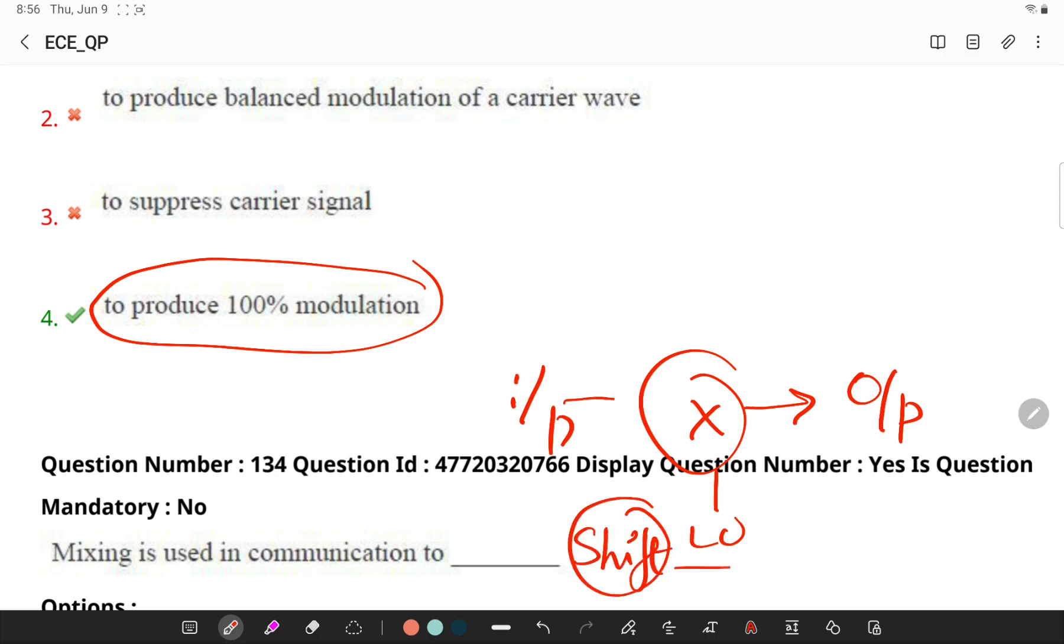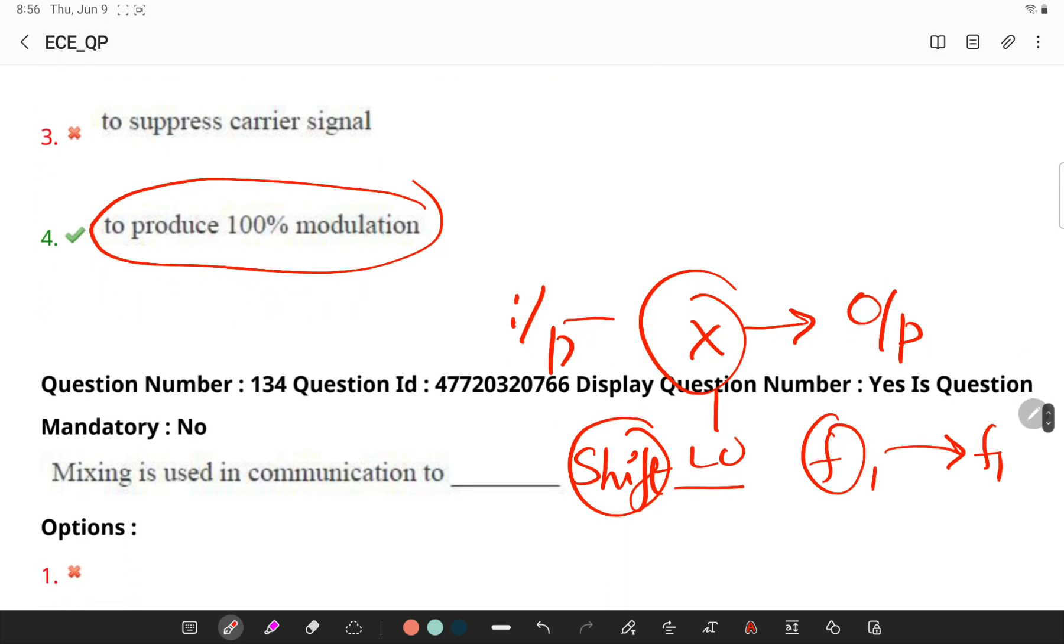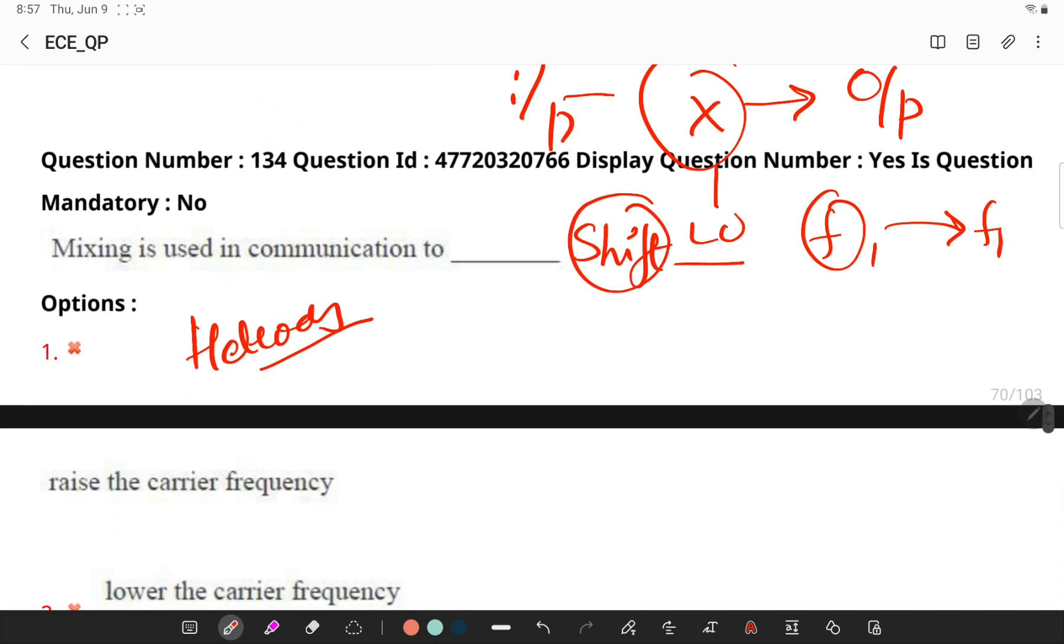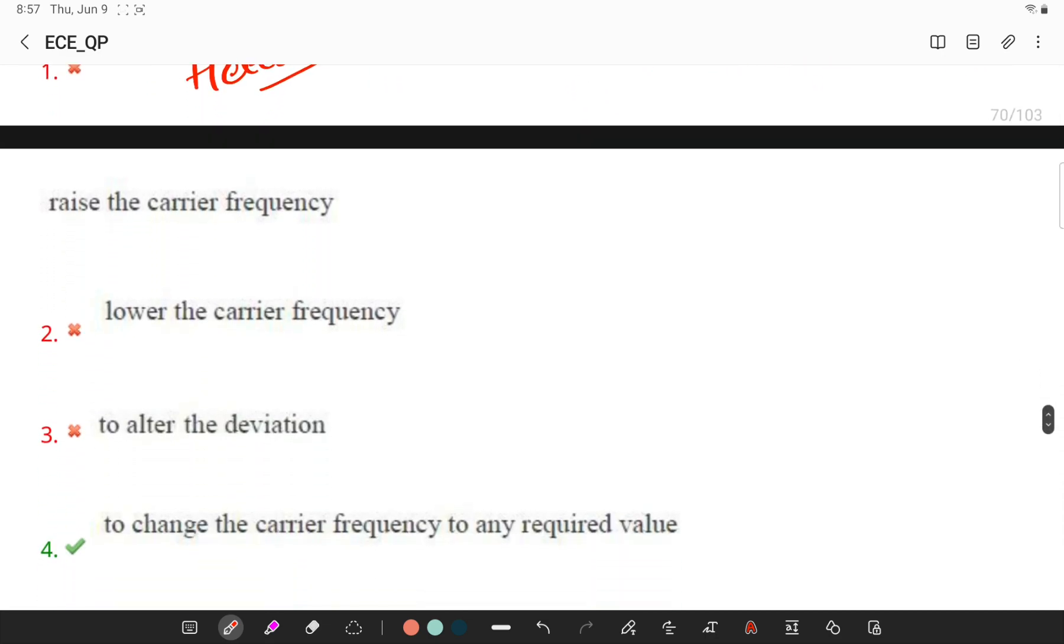And the process is known as heterodyning, for convenience in signal or further signal processing. So mixing is basically to change a carrier frequency to any required value. Remember, in superheterodyne receiver, mixer is used to move the received signal to a common intermediate frequency.